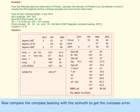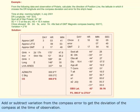Compare the compass bearing with the azimuth to get the compass error. Add or subtract variation from the compass error to get the deviation of the compass at the time of observation.